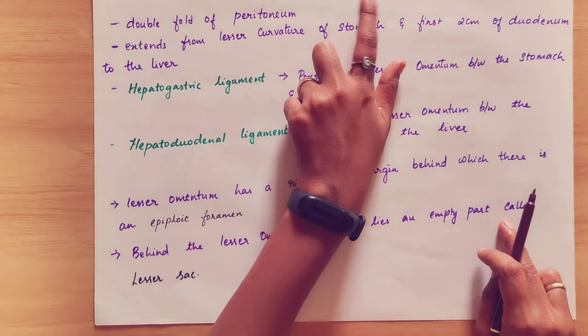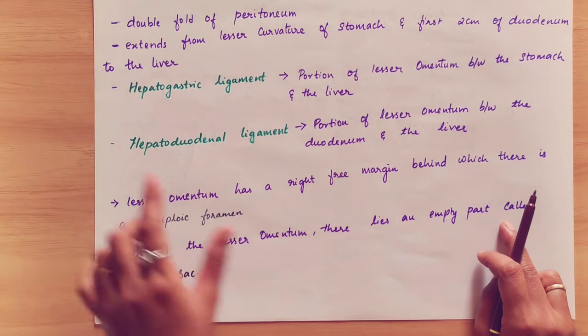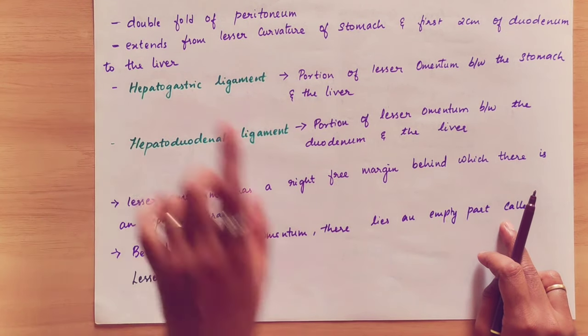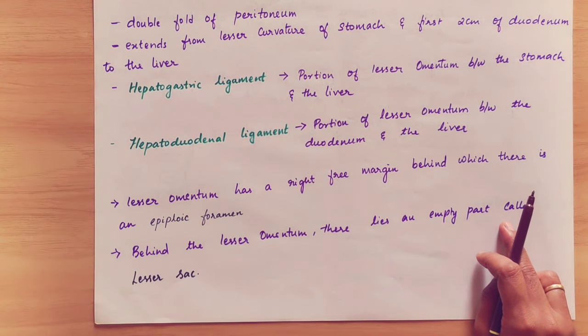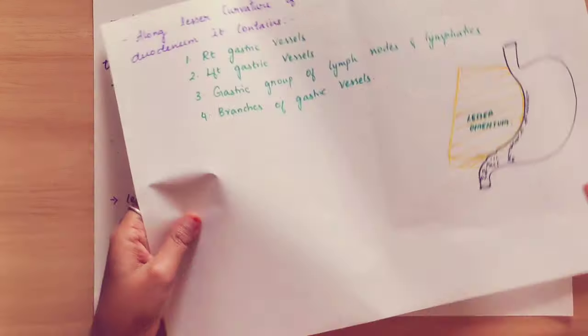So, lesser omentum is a double fold of peritoneum. It extends from the lesser curvature of the stomach and the first two centimetres of the duodenum to the liver.